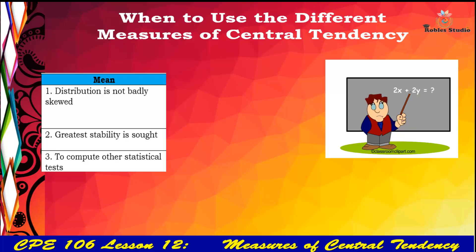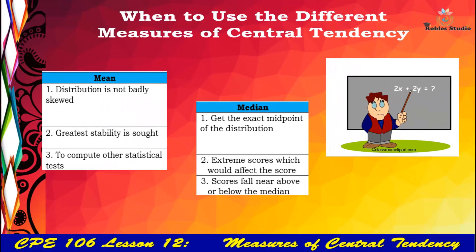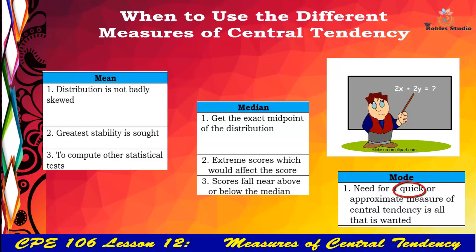For the median, we use it when we want to get the exact midpoint of the distribution, to account for extreme scores that would affect the result, and for scores that fall near above or below the median. For the mode, it is used when we need a quick or approximate measure of central tendency.